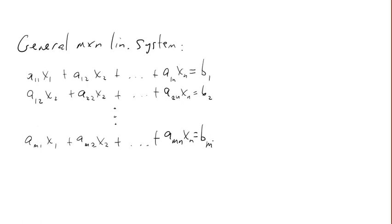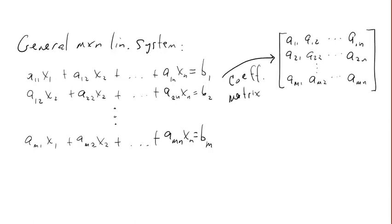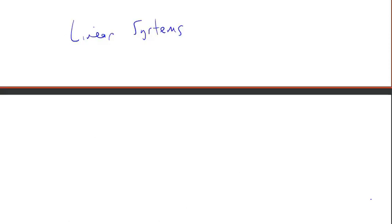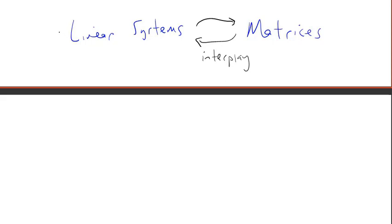Recall from earlier in the video the general form of an m by n linear system. The corresponding coefficient matrix is an m by n matrix, and the augmented matrix is an m by (n+1) matrix — one extra column. We're going to see that a common theme in linear algebra is the interplay between linear systems and matrices: matrices help us solve linear systems, and linear systems help us solve matrix problems.